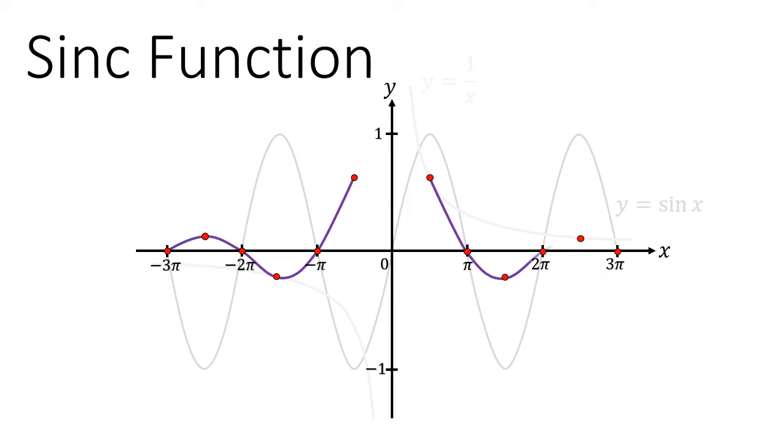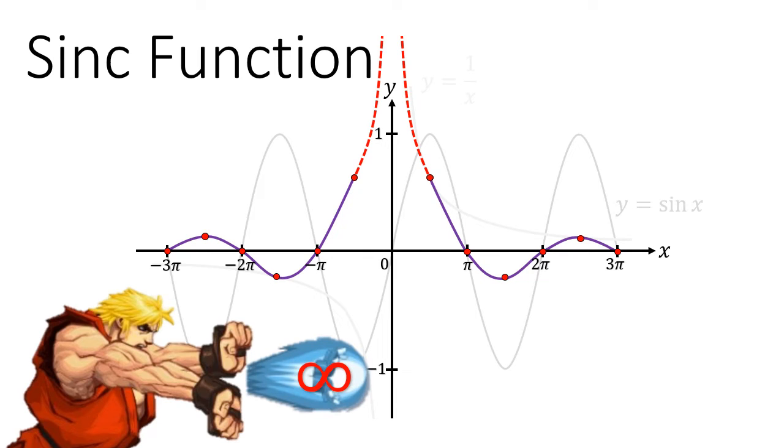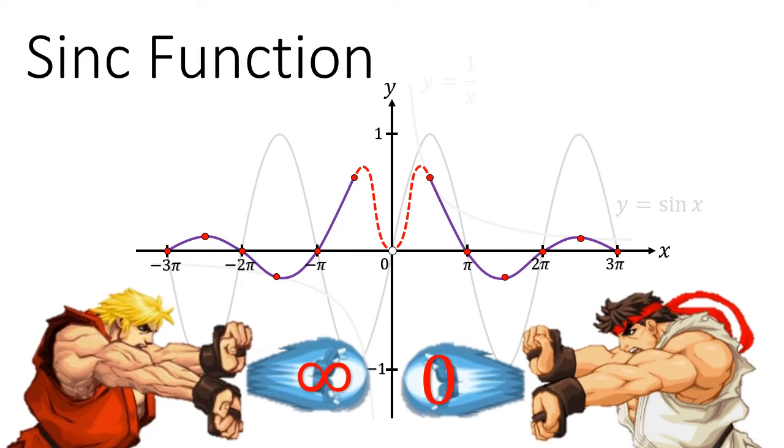After plotting a smooth curve around the points that we know, the question now is what happens as this function tends to 0? Will the reciprocal function win and it tends to infinity? Or will the sin function win and will the function tend to 0? Or maybe it might be something else entirely?